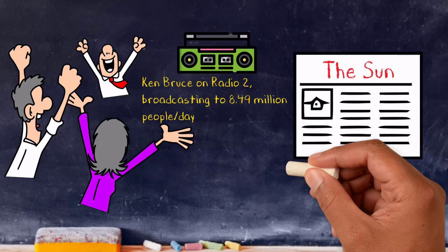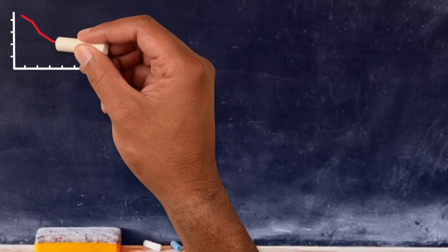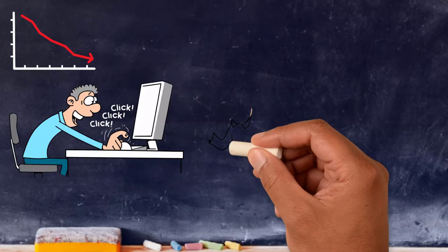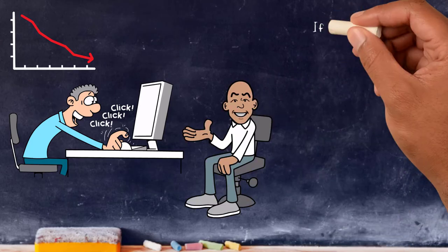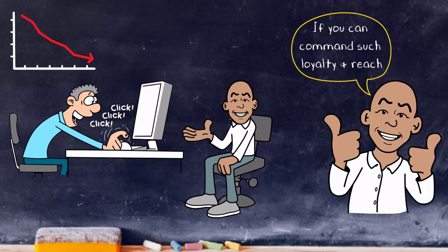Likewise, The Sun just sells under 2 million copies a day. Sure, that's down from its heyday, but it's making up the difference with website hits. To me, those figures speak for themselves. If you can command that sort of loyalty and reach, you're clearly doing something right in getting your message out there.